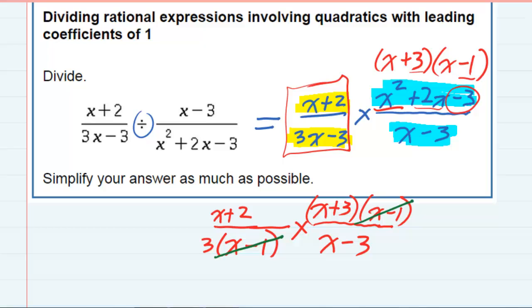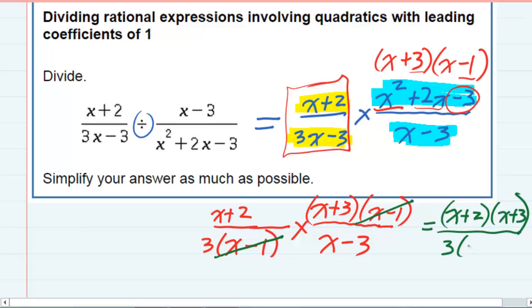Now the other terms, nothing cancels diagonally, so I'm going to be stuck with just multiplying them. In the top, x plus 2 times x plus 3, and in the bottom, 3 times x minus 3.